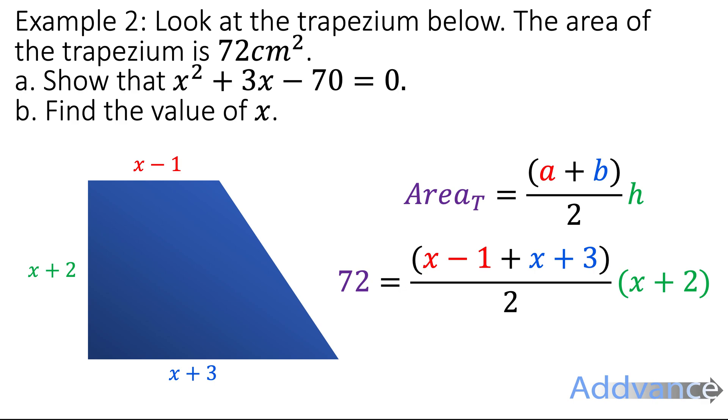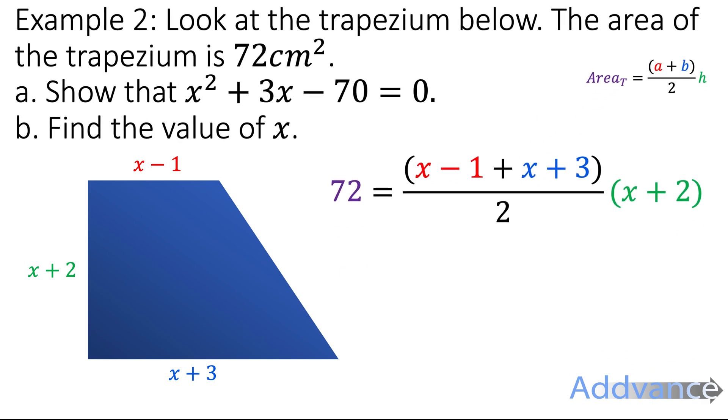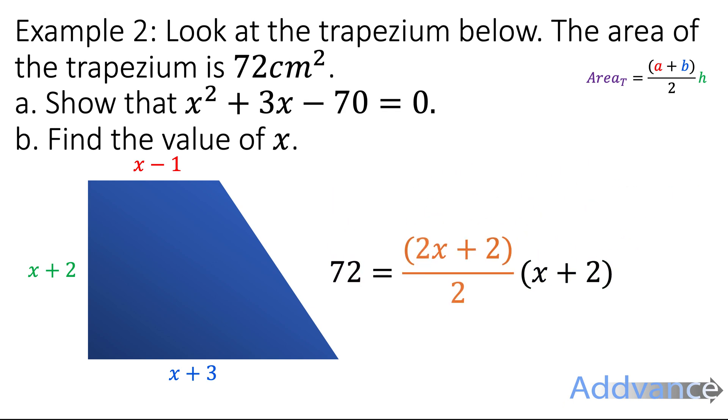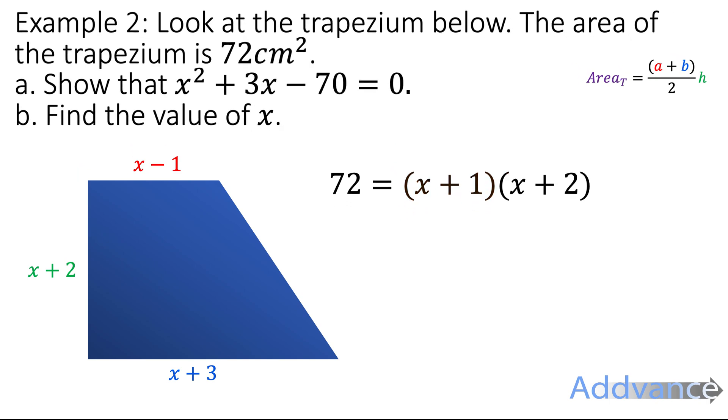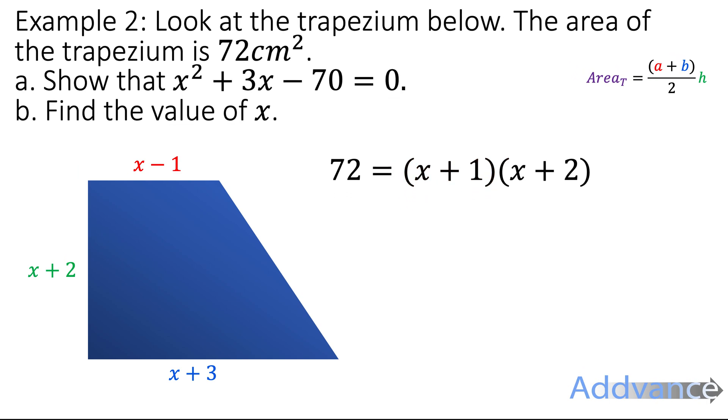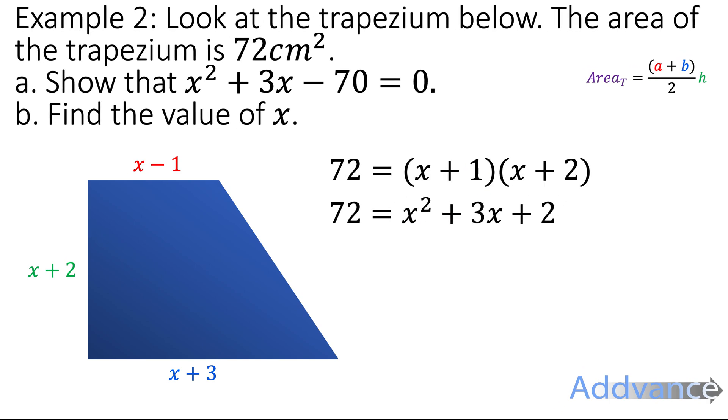And now we can simplify that. So x - 1 times x + 3 is just the same as 2x + 2. And here we have this fraction 2x + 2 divided by 2. Well you can divide everything by 2 and simplify it. So 2x + 2 divided by 2 is just the same as x + 1. And we get 72 = (x + 1)(x + 2). We can now expand those brackets and we get x² + 3x + 2.